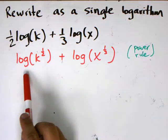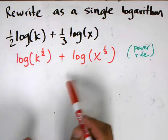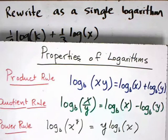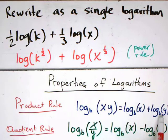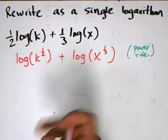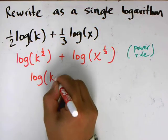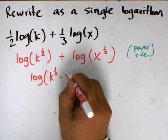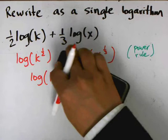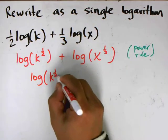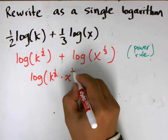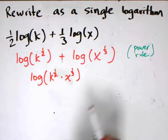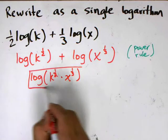Now I've gotten rid of all the constants in front, and I can condense them together. To do this I apply the product rule: log of x plus log of y combines to log of x times y. So combining them here, you get log of k to the one half times x to the one third. And there you have it — we've converted this into a single log statement.